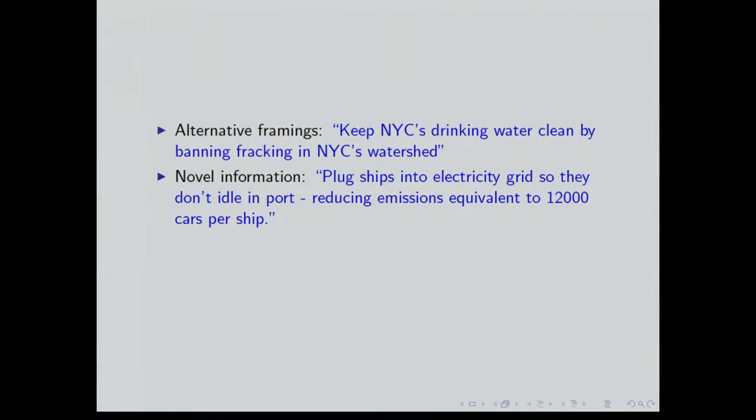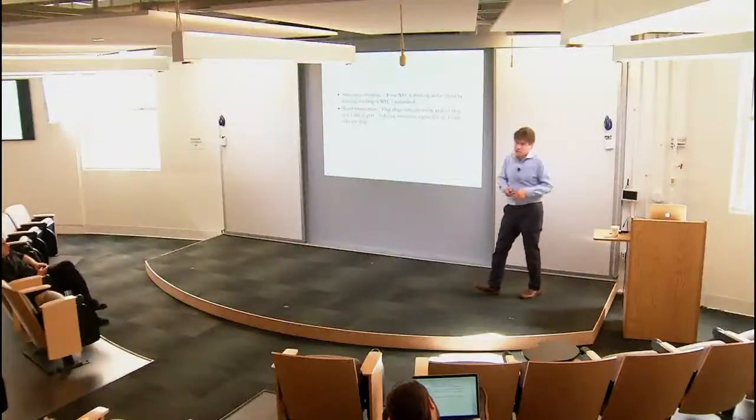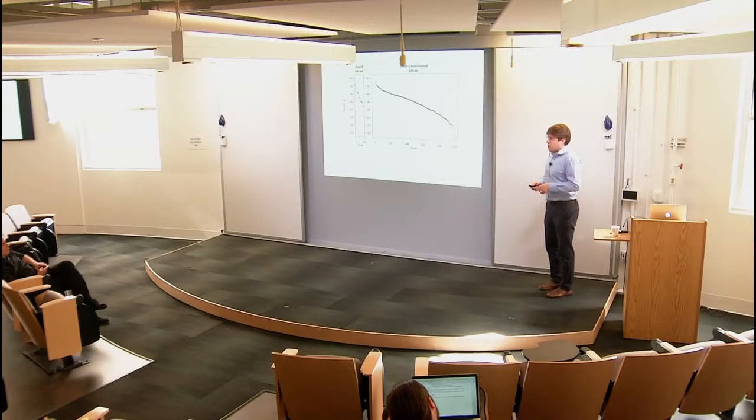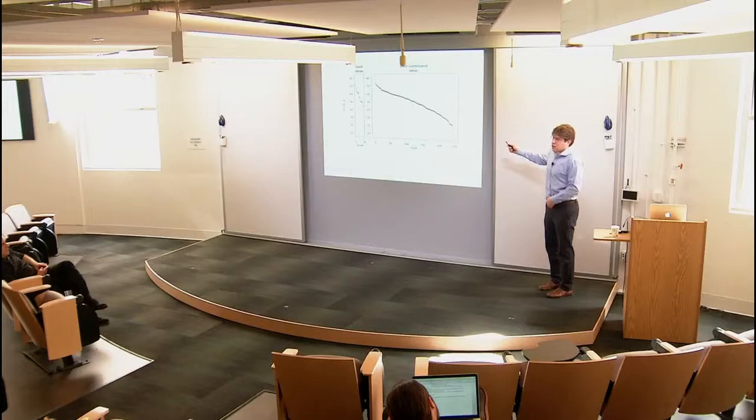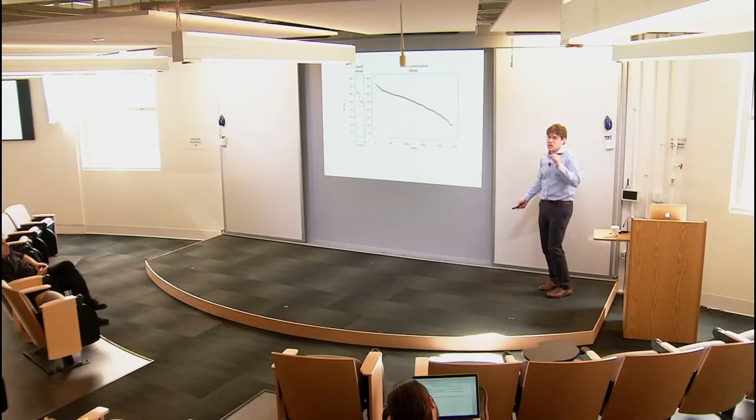The second broad category of uploaded ideas that score well is novel information. This is stuff that's actually new and unanticipated to the user. One example of this: plug ships into the electrical grid so they don't idle in port, reducing emissions equivalent to 12,000 cars per ship. This is pretty interesting. You might wonder if this is even true. That was something that the mayor's office wondered. It turns out that it's more like 5,000 cars per ship. After this idea sort of bubbled up, they investigated it, and this turned out to be something that was very interesting to them.